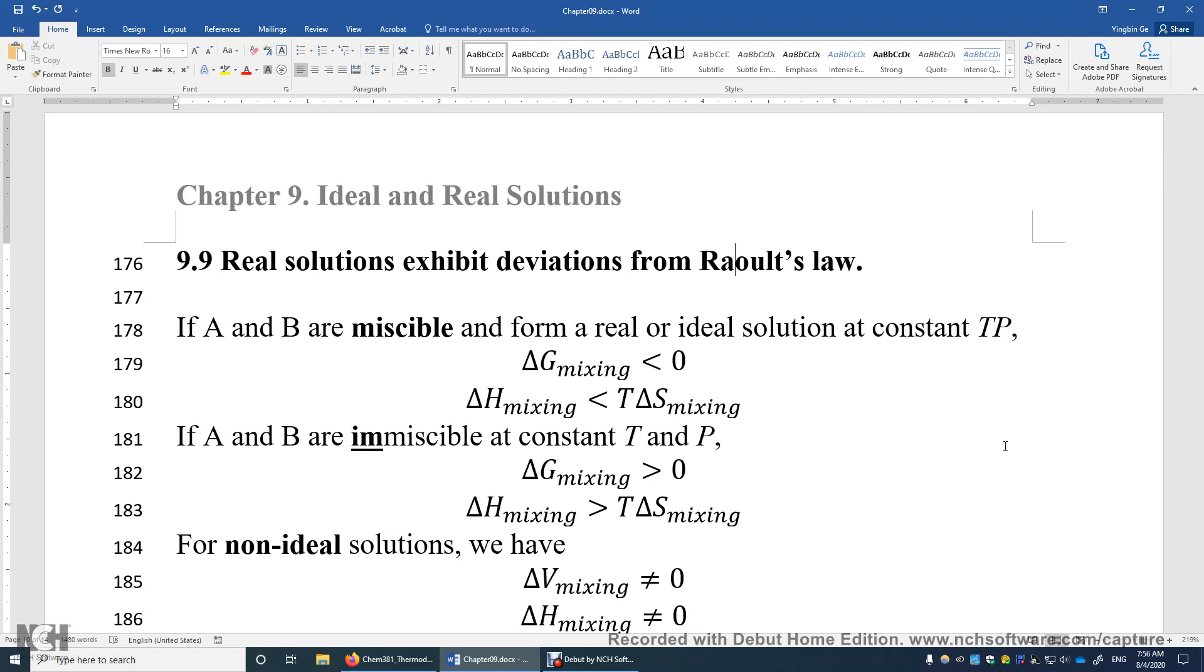If A and B are immiscible, such as oil and water at room temperature and under one bar pressure, that means the Gibbs energy change of mixing water and oil is positive. That's why they do not mix. In this case, delta H is greater than T delta S.